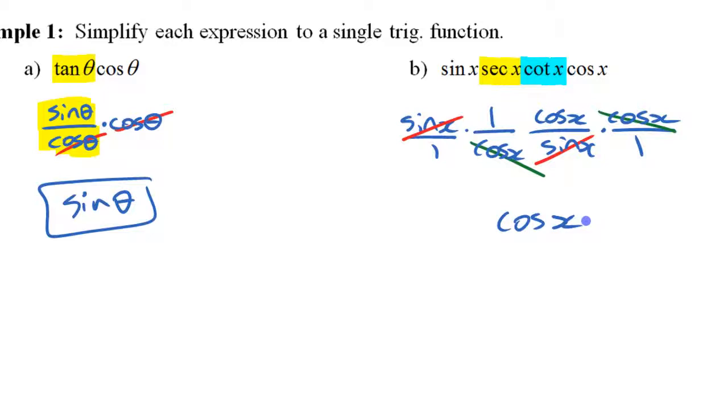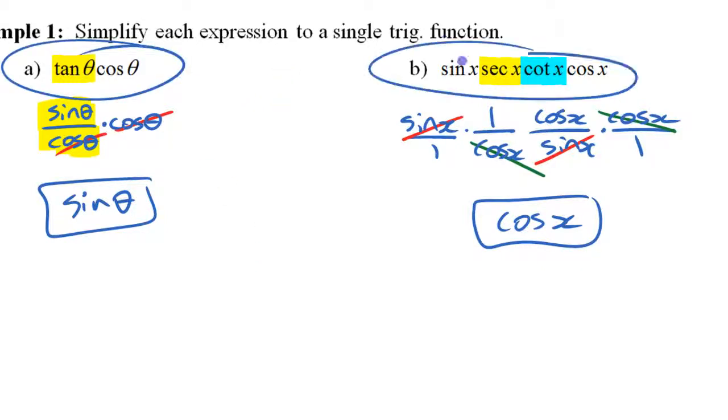All right, there's a first look at simplifying trig expressions using reciprocal and quotient identities. These two are fairly straightforward simple expressions, don't require a lot of steps to simplify them, and now you're probably ready to move on to something a little more complex.